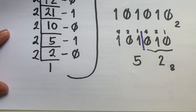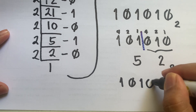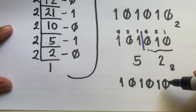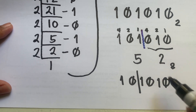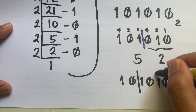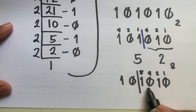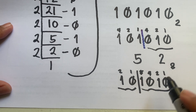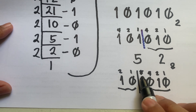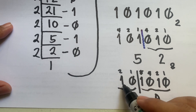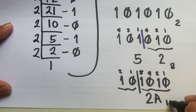To convert to hexadecimal, we use the binary equivalent 101010 and group the digits by 4, starting from the right, because each hexadecimal digit is equivalent to 4 binary digits. Using positional values 1, 2, 4, 8, we add only the values opposite 1. So we have 2 plus 8 equals 10. In hexadecimal, 10 is represented by the letter A. The remaining group gives us 2. So the hexadecimal equivalent of 42 is 2A.